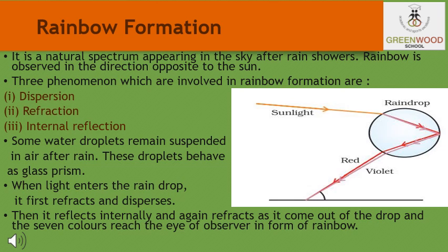A rainbow is a natural spectrum appearing in the sky after a rain shower. It is caused by the dispersion of sunlight by the tiny water droplets present in the atmosphere. A rainbow is always formed in a direction opposite to that of the sun. The water droplets act like small prisms — they refract and disperse the incident sunlight, then reflect it internally, and finally refract it again when it comes out of the raindrop. Due to the dispersion of light and internal reflection, different colors reach the observer's eye.